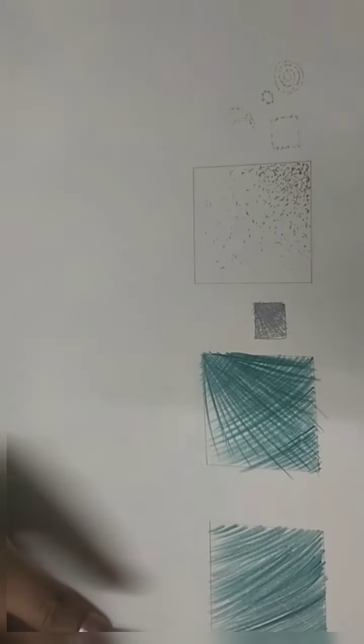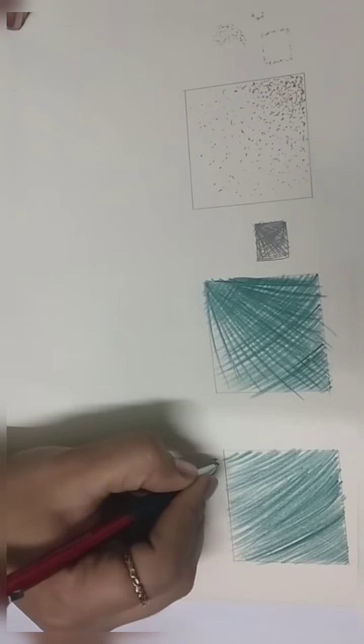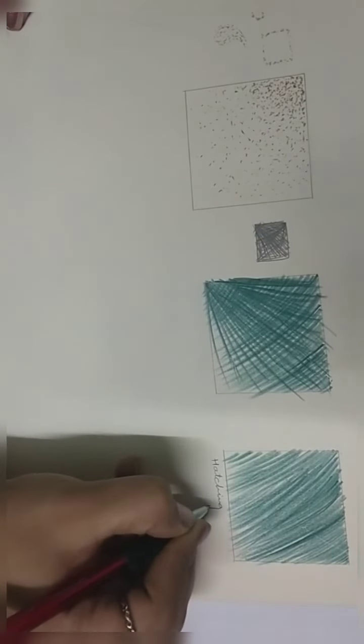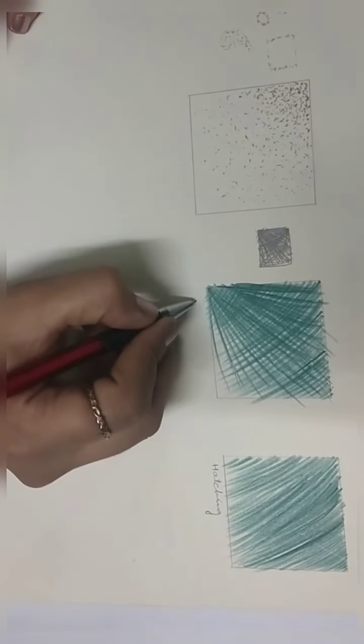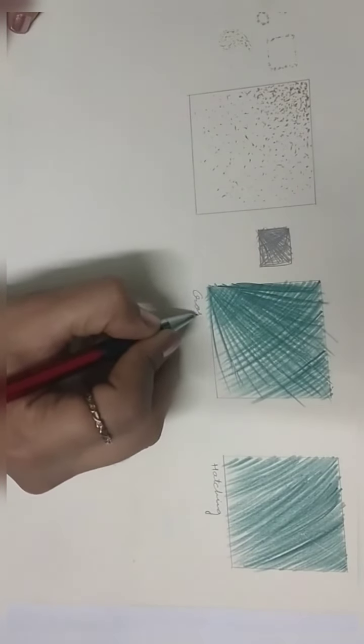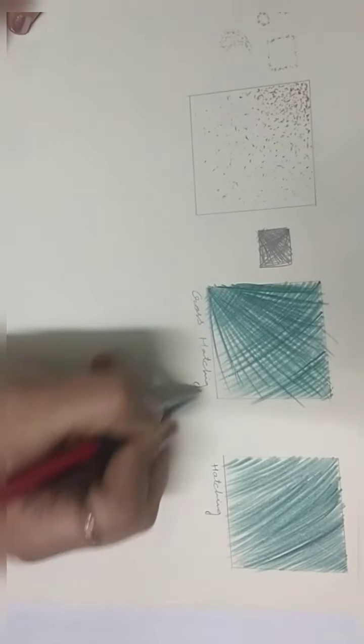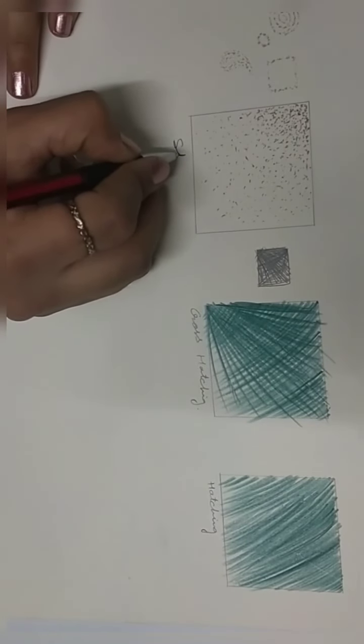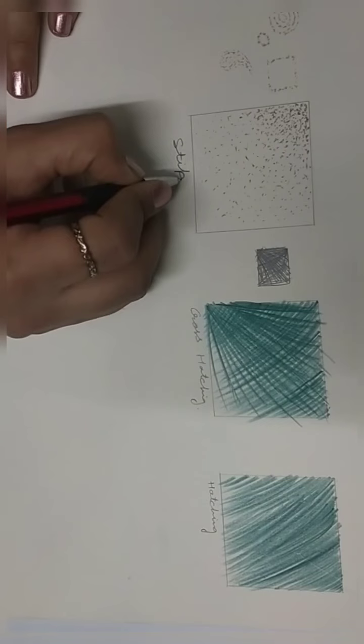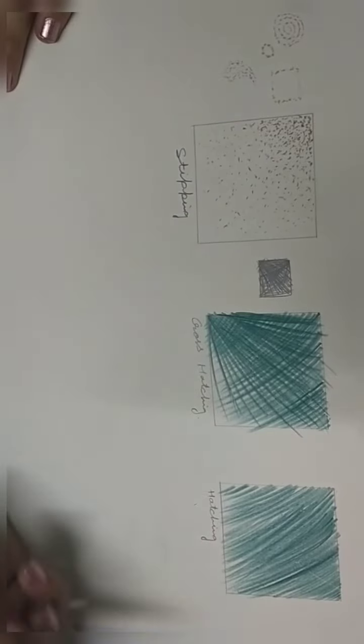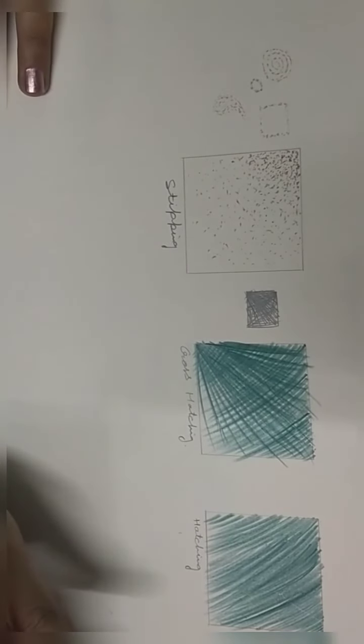So here it is hatching, this is cross hatching, and this is stippling. These are the three types of design that I am shown here. In the next video we will do more rendering work.